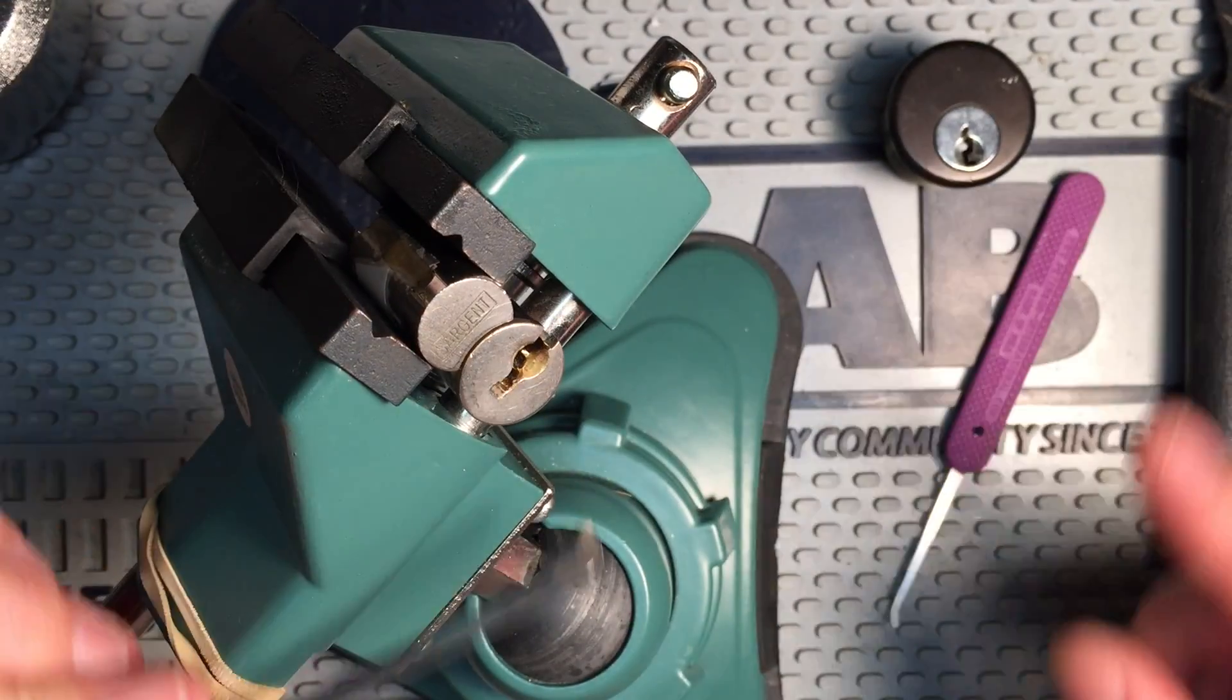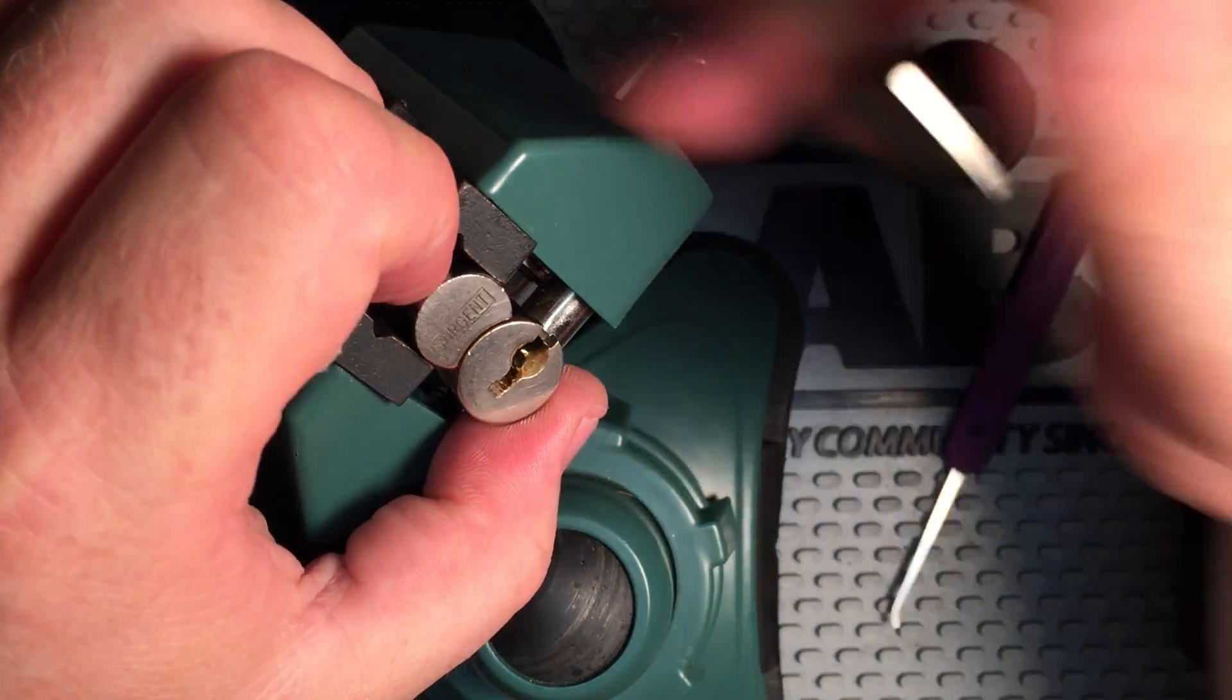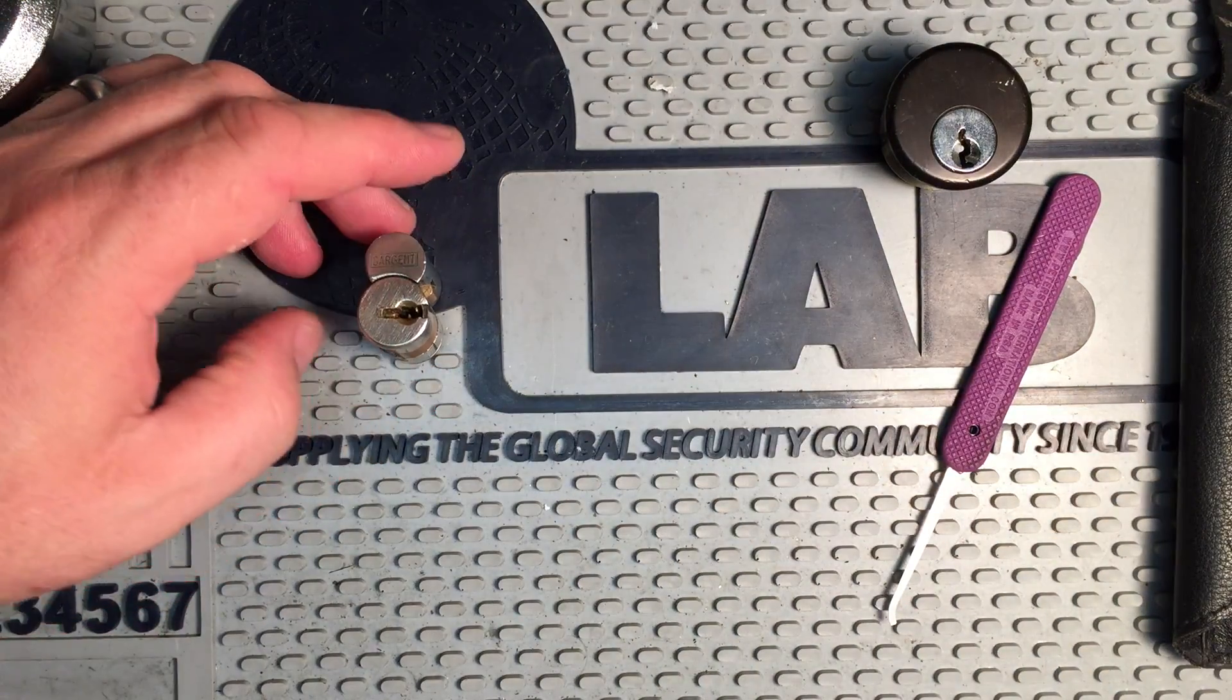There we go. And we picked it to operating. So there's an operating, well, two control and an operating pick on the same lock.